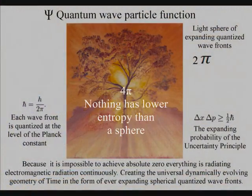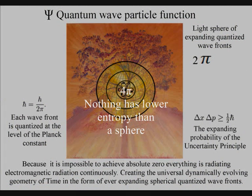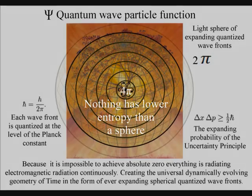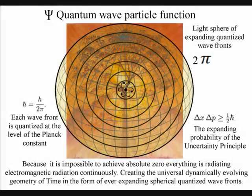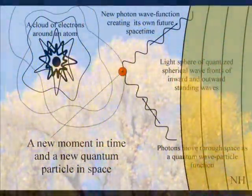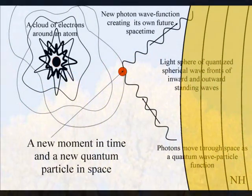The second law of thermodynamics falls out of this theory. The organization for the spontaneous disorganization of entropy is formed by the spherical symmetry of the quantum wave particle function. The spontaneous absorption and emission of light forms the flow of time.